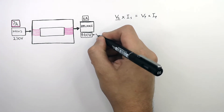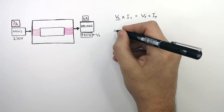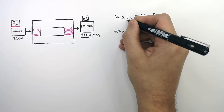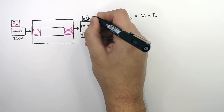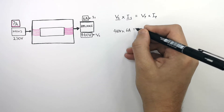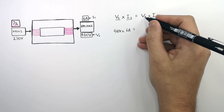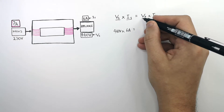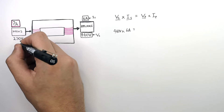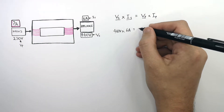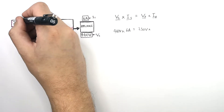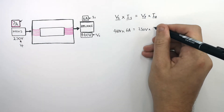VS, the potential difference across the secondary coil, is 460 volts. We multiply that by IS, the current across the secondary coil, which is 6 amps. So 460 volts times 6 amps equals VP times IP. VP, the potential difference across the primary coil, is 230 volts, and we are trying to figure out IP, the current in the primary coil.